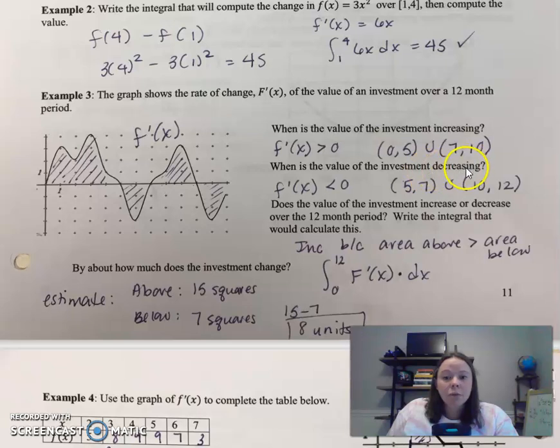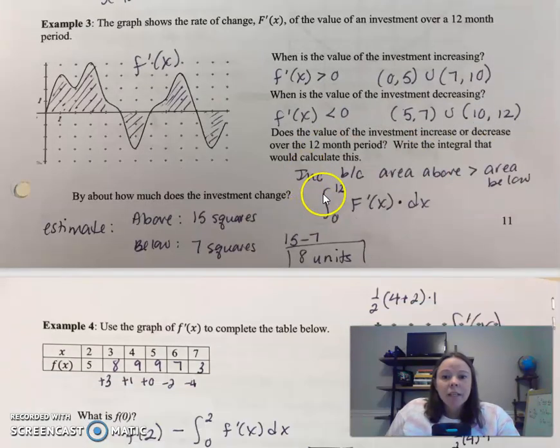When is the value of the investment decreasing? That's when your derivative is negative. So that's where these intervals come from. Does the value of the investment increase or decrease over the 12-month period? Write the integral that would calculate this.